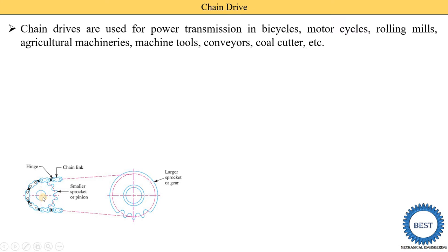Power is transmitted from one shaft to another shaft by using these three devices. Here we use two sprockets and one chain to transmit the power. The three major components are: two sprockets, one is the smaller sprocket, second one is the larger sprocket, and the third one is the chain.